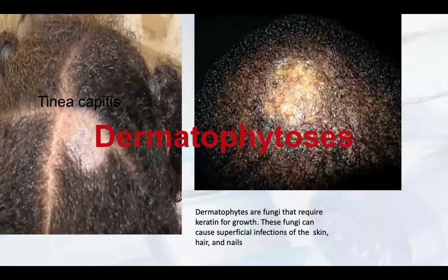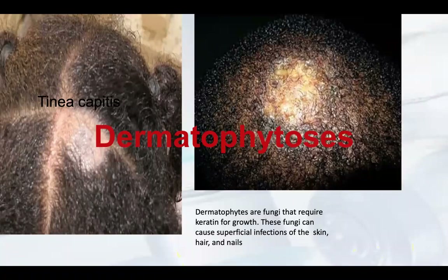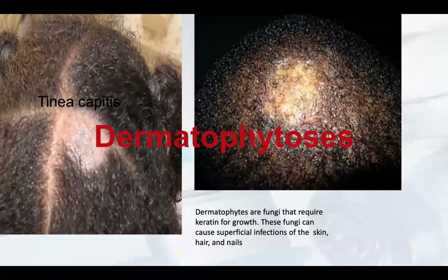When there is disease involving the skin, these are known as dermatophytes. Dermatophytes are fungi that require keratin for growth. Many shampoos contain keratin, so when keratin is present, there are chances of fungal growth. These fungi can cause superficial infections of the skin, hair, and nails.